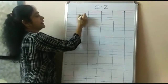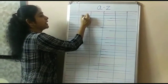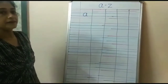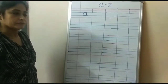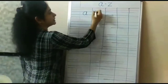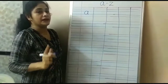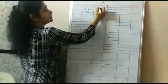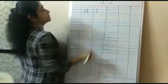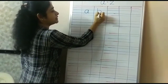First of all, write A. Make a round and then a line. Now write B. Your letter should go from the red line to the blue line. Make a standing line and make a round.